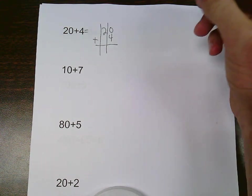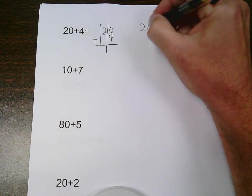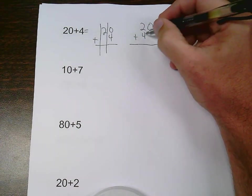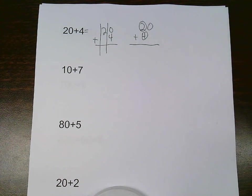The problem a lot of kids have is they do 20 plus 4, and when they do that, they're adding ones with tens, and you can't do that. You always have to add ones with ones, tens with tens, so on and so forth.